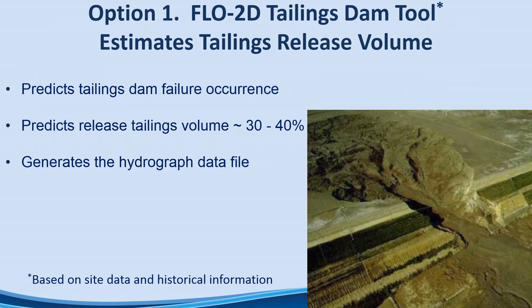The first option uses a free tool available for download from the website. It predicts the potential tailings dam failure and estimates a release volume — historically this is typically between 30 and 50 percent of the total volume. It generates a breach hydrograph data file that you can use directly in the Flow2D model to route the flow downstream.